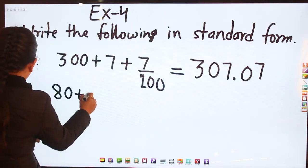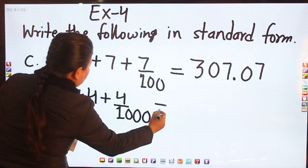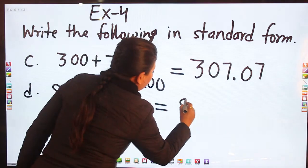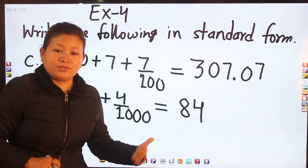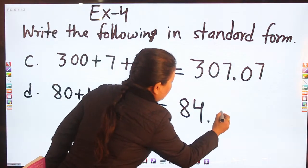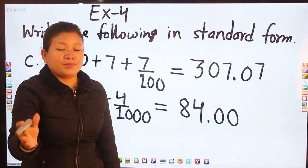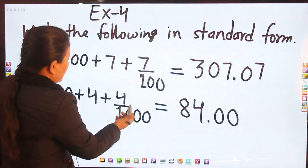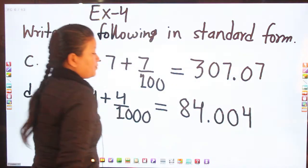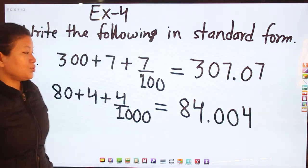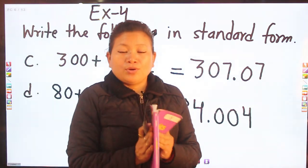Question d: 80 plus 4 plus 4 by 1000. That gives 84 as the whole number part. We do not have fractions with denominator 10 or 100, so we put decimal and zero in the tenths place and zero in the hundredths place. At last we have the fraction 4 by 1000, so we put 4 in the thousandths place, giving 84.004.